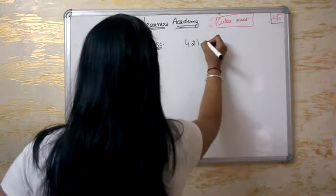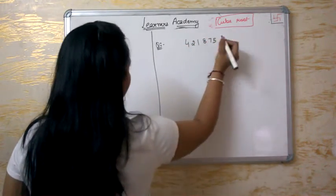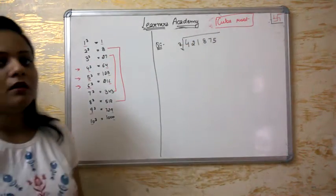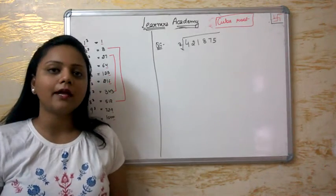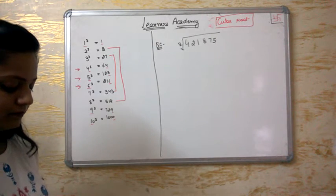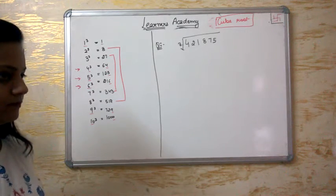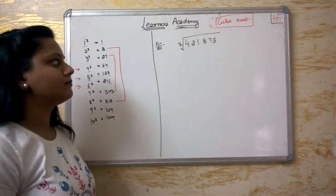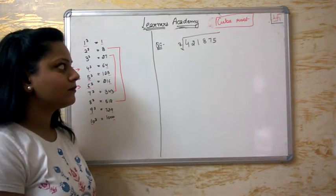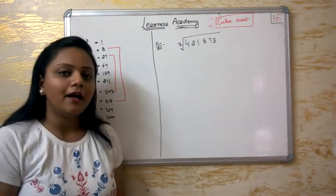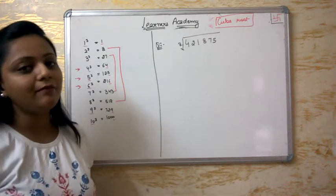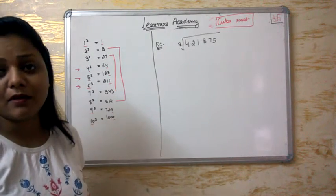The number is 4, 2, 1, 8, 7, 5. I will give you one minute to solve it. Try it if you can. I know that you will not be able to answer it, but if you have been able to answer it, great.